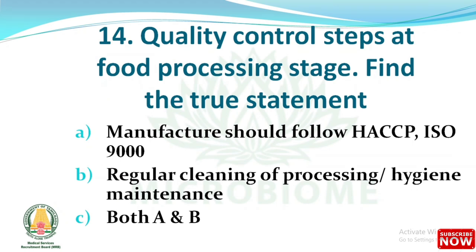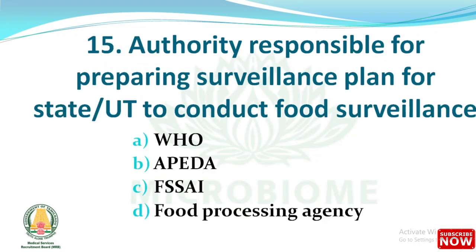Next question: regarding quality control steps at the food processing stage, find the true statement. The options are: manufacturer should follow HACCP, ISO 9000, regular cleaning of processing and hygiene maintenance, and both A and B. The right answer is option C: both A and B — that is, manufacturer should follow HACCP and ISO 9000, and regular cleaning of processing or hygiene maintenance.